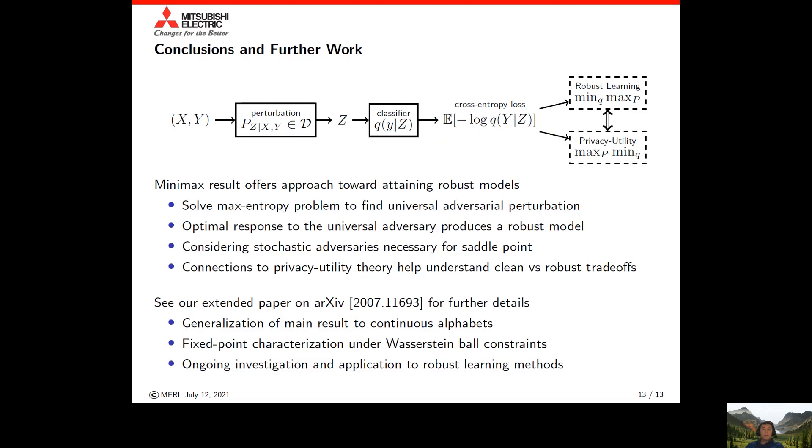To summarize our work, we present a minimax result that draws the connections between robust machine learning theory and privacy utility trade-off theory. This minimax result offers an approach toward attaining robust models. We can solve the max entropy problem to find the worst case universal adversarial perturbation, independent of finding a robust model. Then, when we consider the optimal response to this universal adversarial perturbation, we can use that to produce a robust model. A key observation is realizing that considering stochastic adversaries is necessary for a saddle point and the minimax result to properly hold.